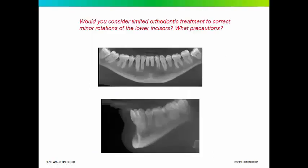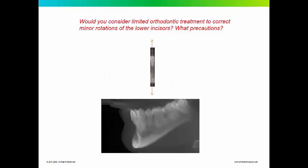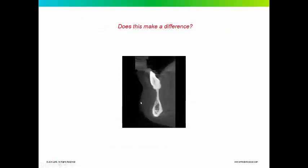If this patient came to your office, would you hesitate to treat them if it was just very minor orthodontic tooth movement? Obviously there are some problems here with root resorption and a little bit of bone loss, but say you had something you could do in a month or two just to realign some minor rotations on the lower incisor. If you had the ability to slice through one single tooth and eliminate all the superimposed structures to look at that tooth on an individual basis, this is what you would get. I think you could argue that makes a difference in whether you would want to treat that patient.